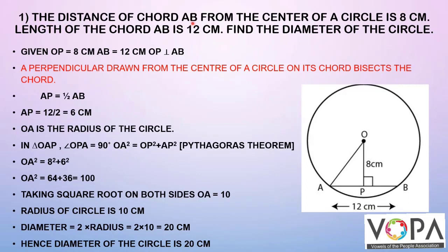Let us solve one problem to understand the concept. The distance of chord AB from the center of a circle is 8 cm. The length of chord AB is 12 cm. Find the diameter of the circle. Given: OP equals 8 cm, AB equals 12 cm, and OP is perpendicular to AB.